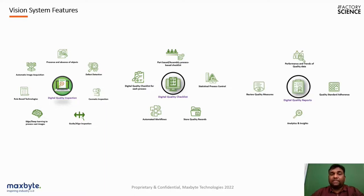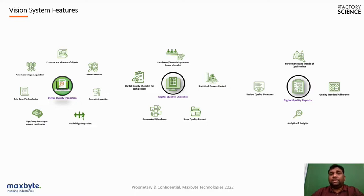The third key feature is the quality report. After inspection and checklists, digital reports allow performance and quality data trends to be easily measured and captured. Quality standard adherence can be monitored, analytics and insights can be obtained from reports, and quality measures taken for a particular line, assembly, or product can be reviewed after a defect is identified. These are the key components and features of a vision system.